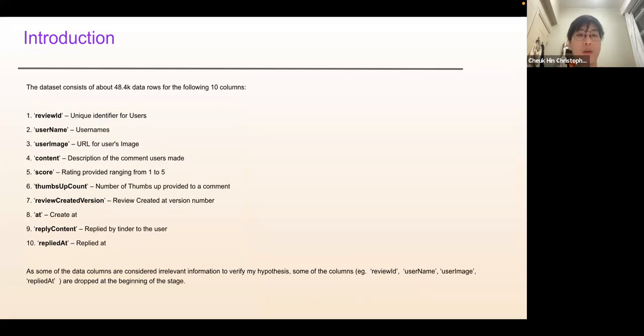The dataset consists of 48.4k data rows and the following 10 columns. These are the columns of the dataset. Some data columns are considered relevant information to verify. Some columns are dropped at the beginning stage.